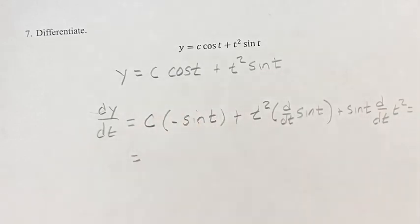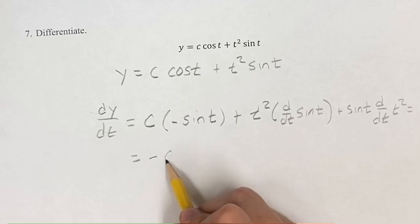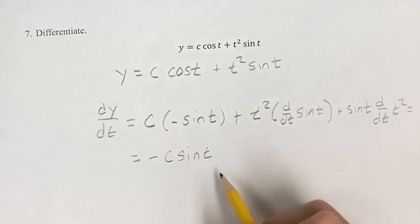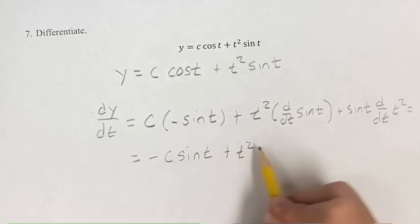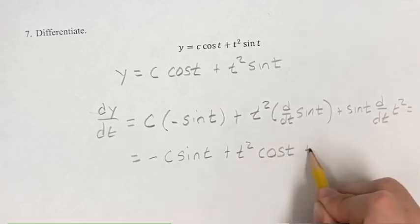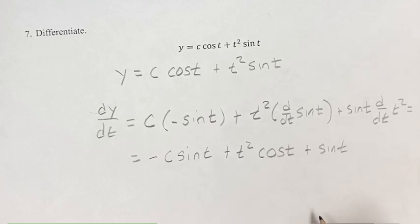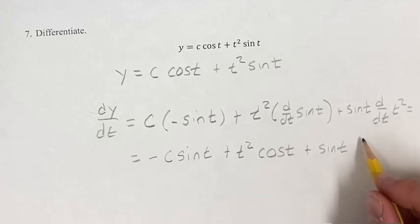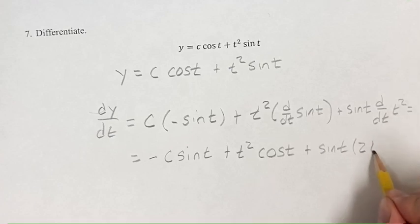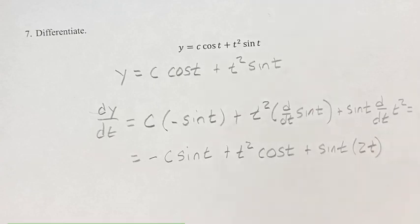This is going to be equal to — just distributing the negative here — negative c sine t, plus t squared times the derivative of sine, which is cosine, plus sine t times the derivative of t squared. We have a power function, so bringing down the exponent: 2 times t to the 2 minus 1 power, so t to the first power, which is just t.